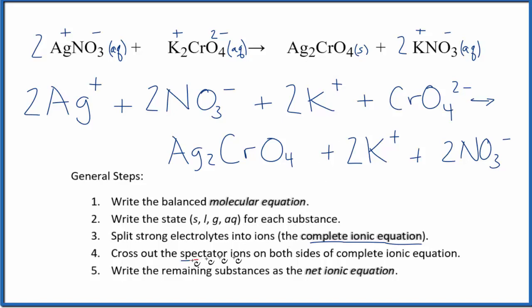So now we can cross out spectator ions. These appear on both sides of the equation. So we don't see Ag on both sides as an ion. But we do see that we have two nitrates here and then the products here. Let's cross those out. They've not changed. Two potassiums, two potassiums. Cross them out. But everything else, that's unique.